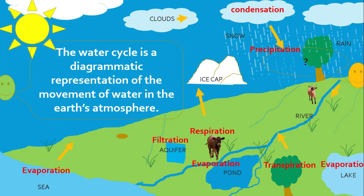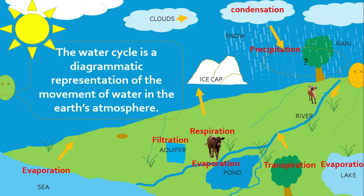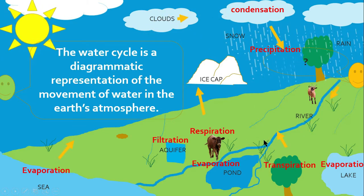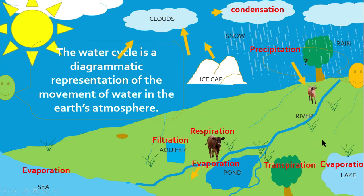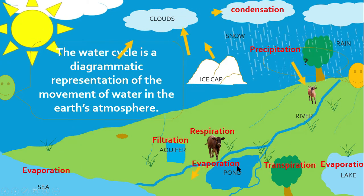Follow the arrows to see the movement of water through the water cycle. Condensation. Precipitation — water forms run off in rivers and lakes. Evaporation from your lake, transpiration from trees, evaporation from ponds.